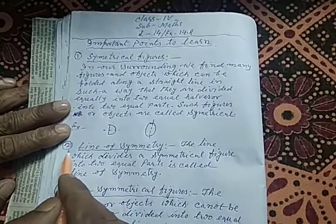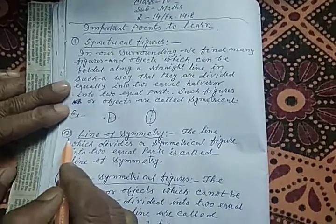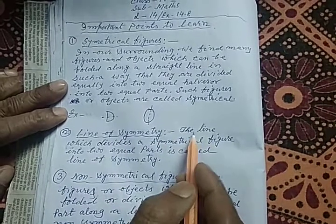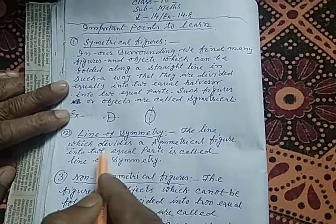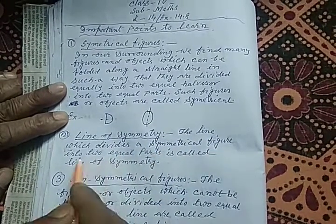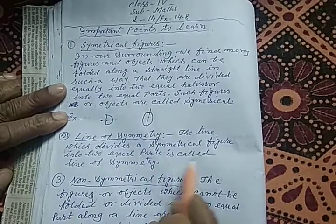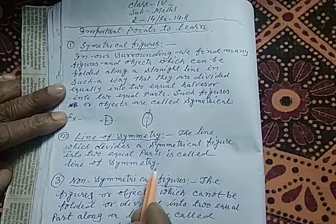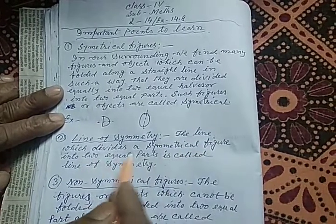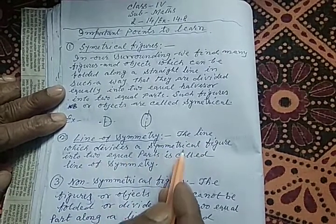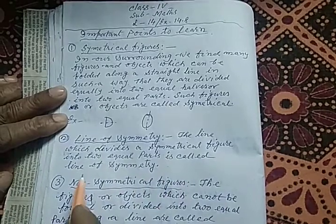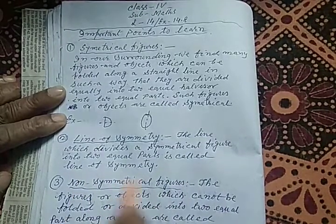The second important point is the line of symmetry. What is the line of symmetry? The line which divides a symmetrical figure into two equal parts is called the line of symmetry.